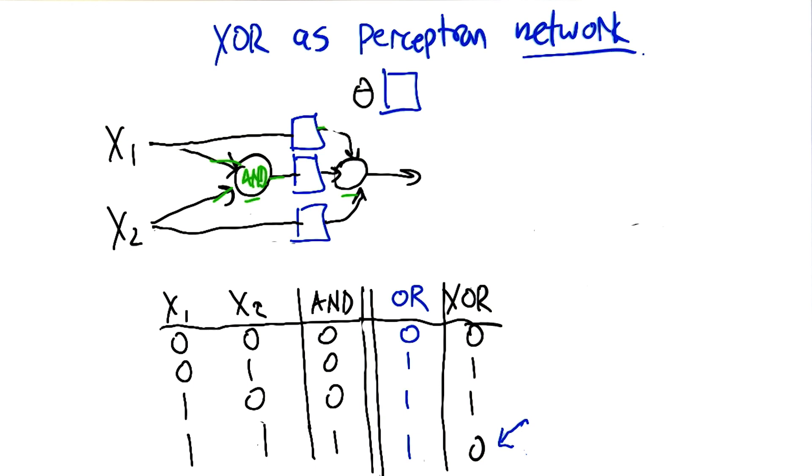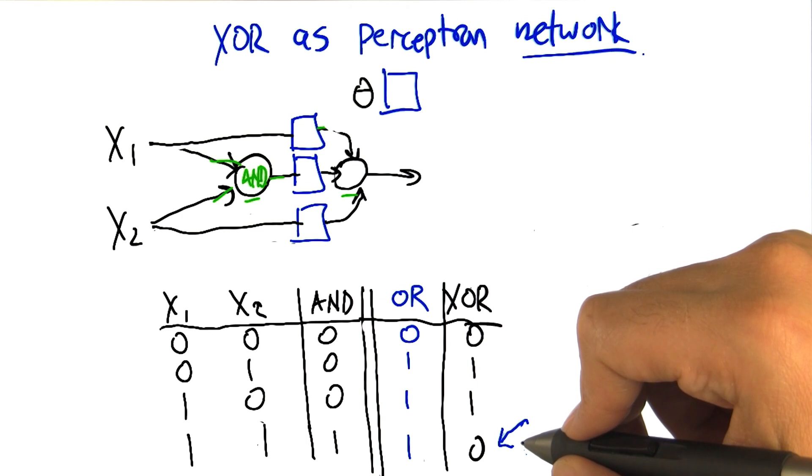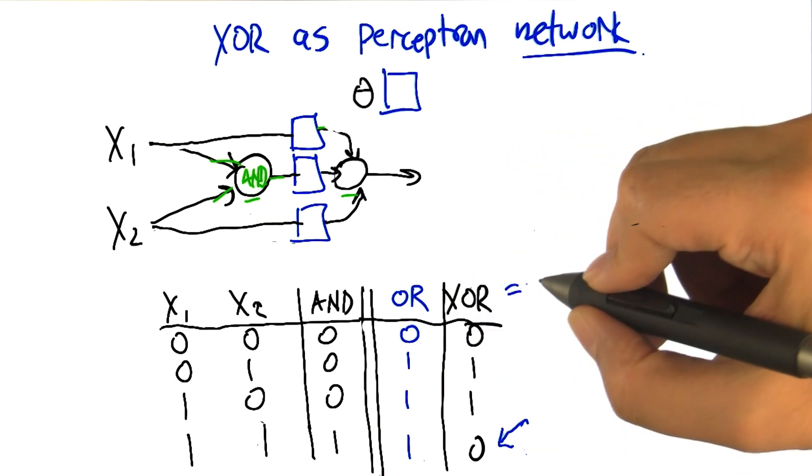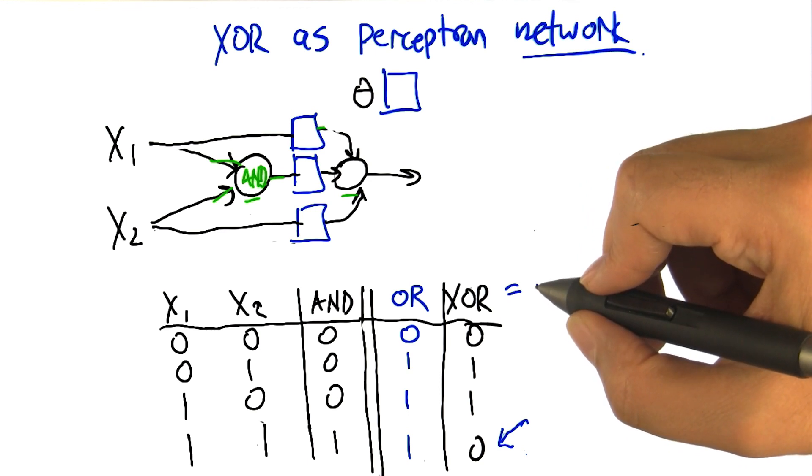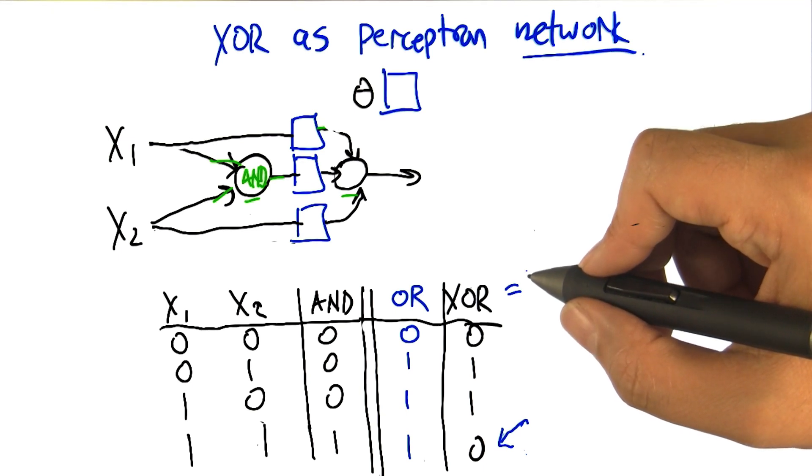So what I'm going to suggest that we really want that last node to do in your drawing is to compute the OR of x1 or x2 and produce the right answer, except in the case of the last row.